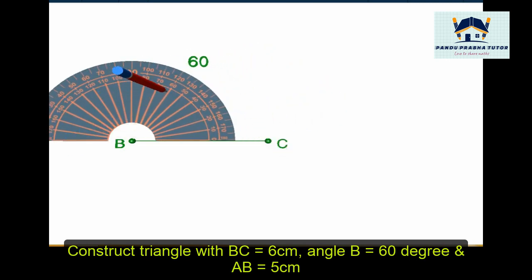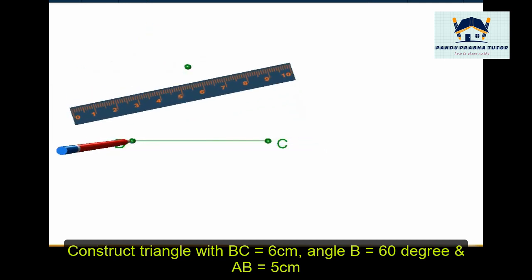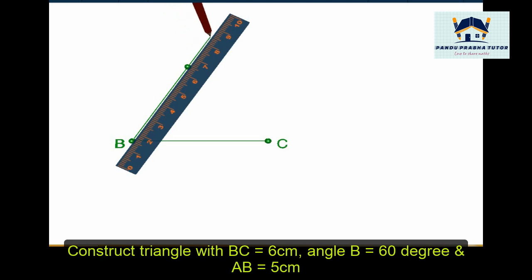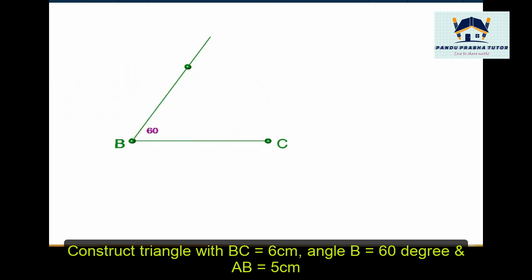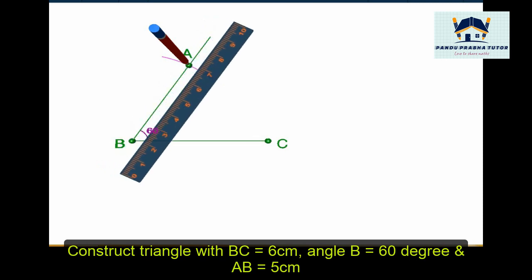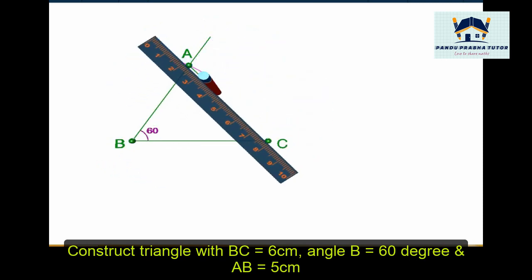Now make an angle of 60 degrees. Draw a line. The measurement of this angle is 60 degrees. With the compass, take 5cm. Cut the line. Call that point as A. Now join AC.